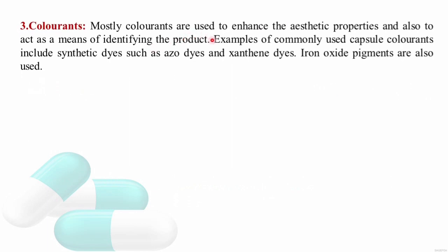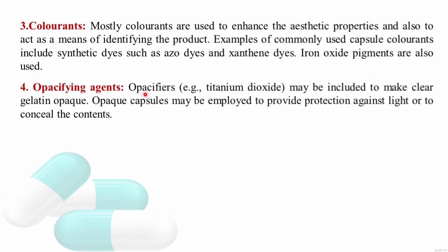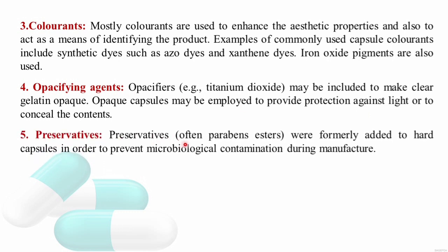Colorants are used to enhance the aesthetic properties and to act as a means of identifying the product. Examples of commonly used colorants include synthetic dyes such as azo dyes, xanthine dyes, and iron oxide pigments. Opacifying agents like titanium dioxide may be included to make clear gelatin opaque so that light cannot pass through the shell. Opaque capsules provide protection against light or conceal the contents. Preservatives like paraben esters are added to hard gelatin capsules to prevent microbiological contamination during manufacture.